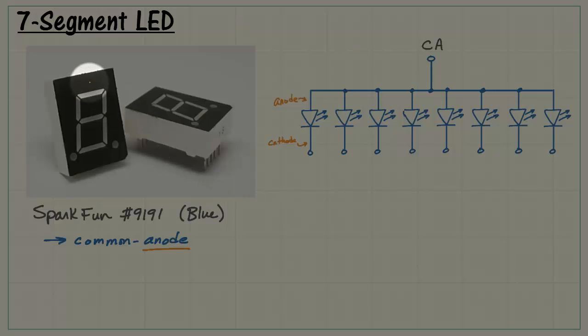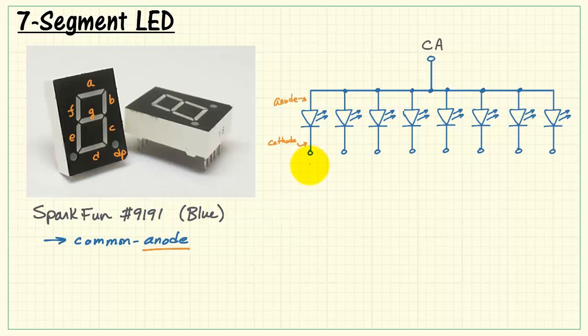The standard labeling scheme for 7-segment LEDs begins with segment A, B, C, D, and so forth, working your way around clockwise. We have G in the middle, and then the decimal point, DP. There's A through G and the decimal point.